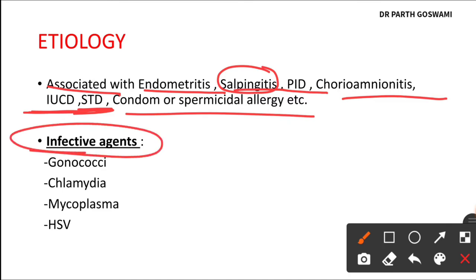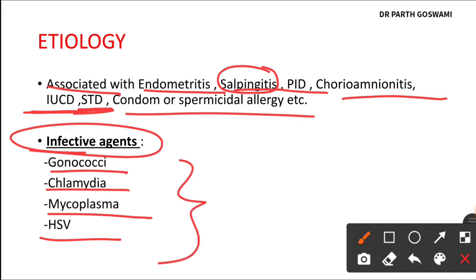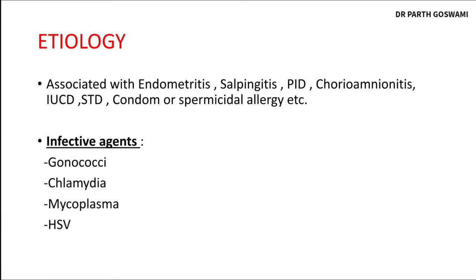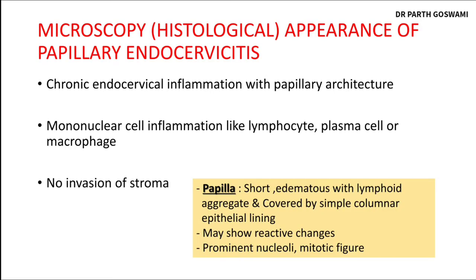Some women can develop endocervicitis due to allergy to spermicidal substances or allergy to latex used in condoms. The etiological agents include gonococci (gram-negative cocci), chlamydia, mycoplasma, and herpes simplex virus — most of which are sexually transmitted. However, in some women, chronic endocervicitis can be present without any identifiable etiology.